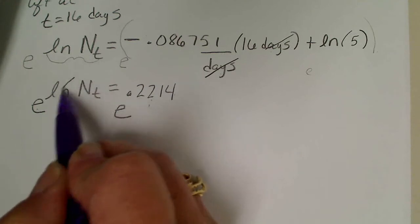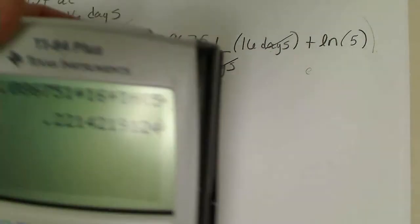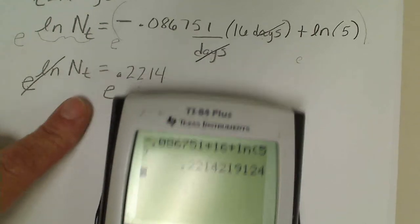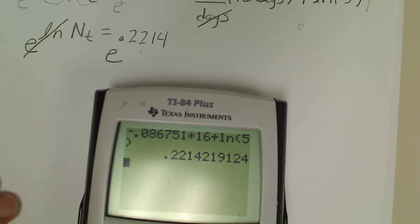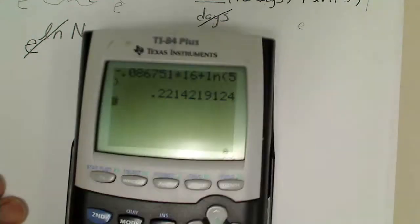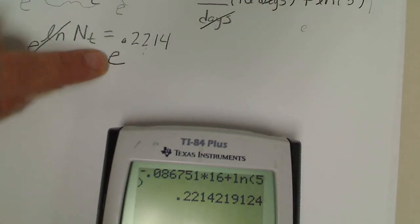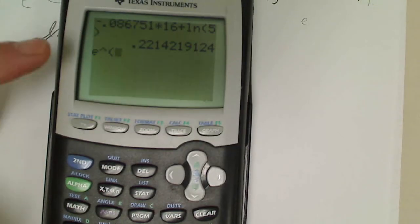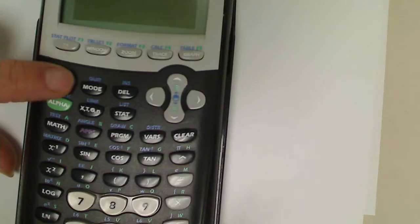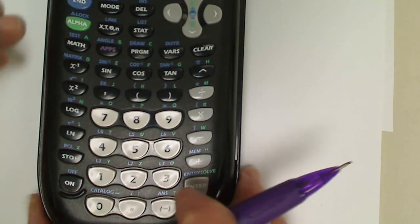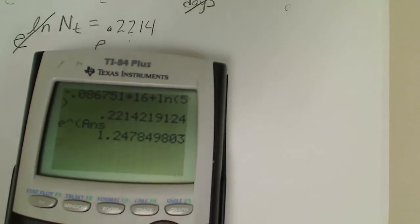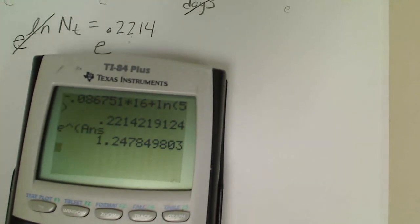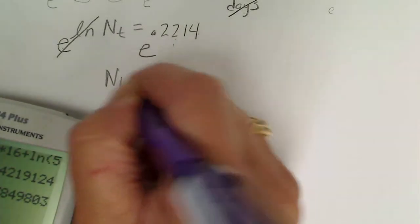I come up with this number, now I'm going to undo the natural log with the base e. The ln and the e cancel each other and since this is an exponent, I'm going to leave the entire number in the calculator. Then to raise the base e to that power, hit the second log. That brings up the eˣ key and I'm going to hit second answer. That second answer key is probably my favorite button because it keeps me from having to re-enter all those numbers. Now we have Nₜ equals 1.2478.